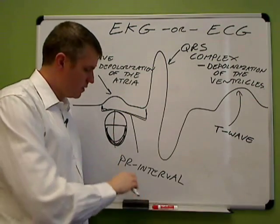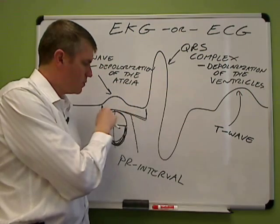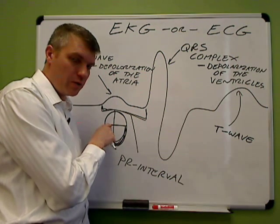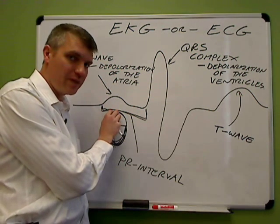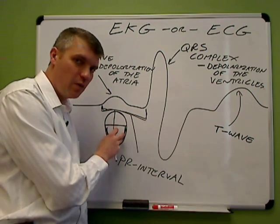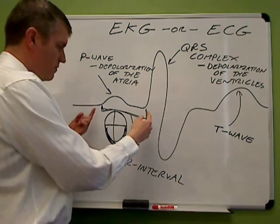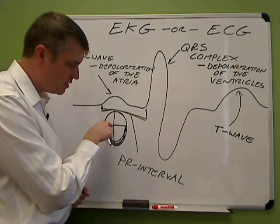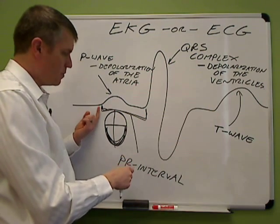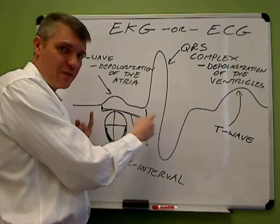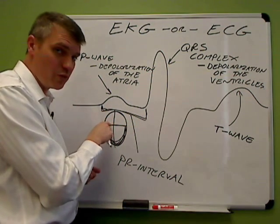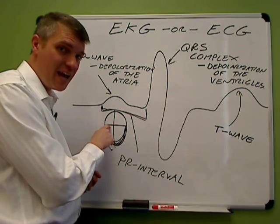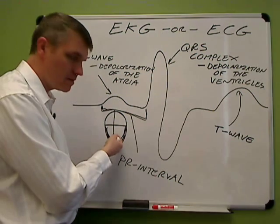Another note: measurement of the PR interval helps you see whether the AV node is working properly, and if the signal that's supposed to come down from the top of the heart actually makes it through to the bottom of the heart the way it's supposed to. If the PR interval is a little bit longer than it should be, that might mean the electrical signal going through the AV node is not going through fast enough. If the PR interval is never constant and always different, then you know the signal from the top of the heart isn't really making it through to the bottom. So the PR interval gives you the status of the AV node.